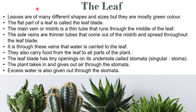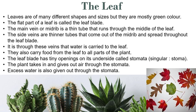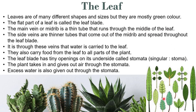Now we will talk about the leaves. Leaves are of many different shapes and sizes, but they are mostly green in colour. Some plants have red, pale yellow or yellow leaves. The flat part of a leaf is called the leaf blade. The main vein or midrib is a thin tube that runs through the middle of the leaf. The side veins are thinner tubes that come out of the midrib and spread throughout the leaf blade.